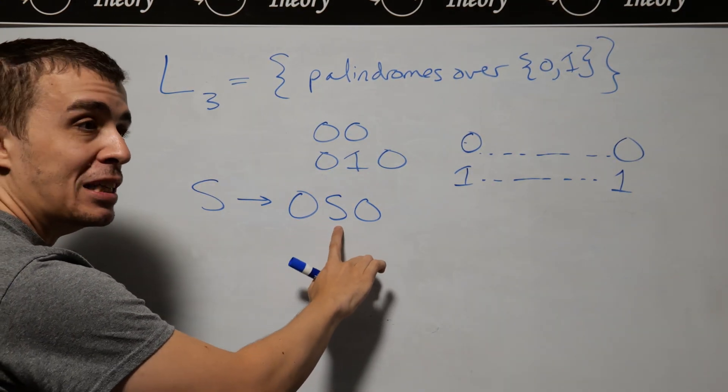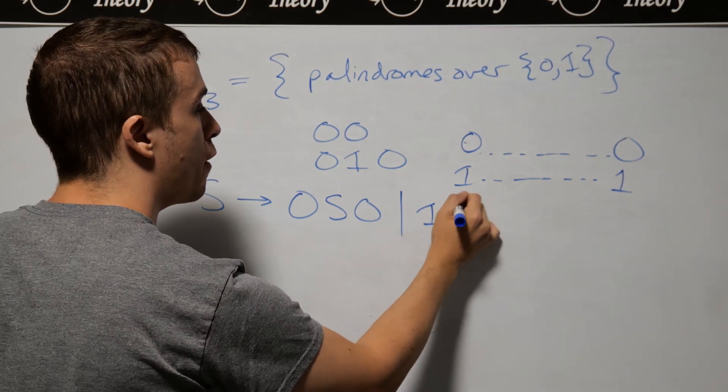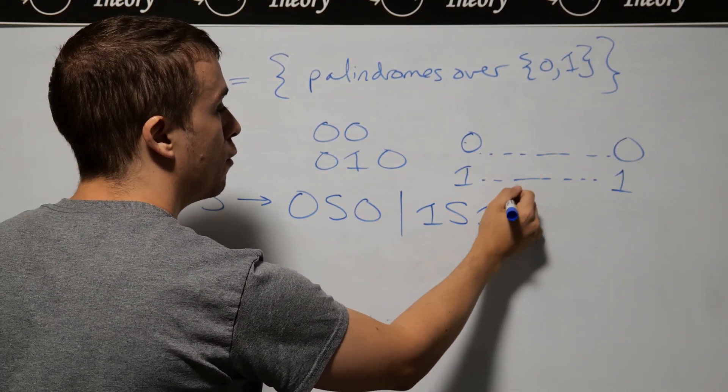So 0 followed by some palindrome, then a 0. But also, we can have a 1 followed by some palindrome and a 1 for similar reasons.